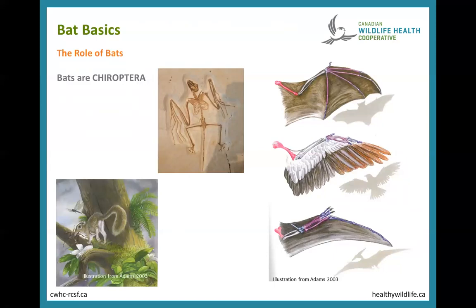Chiroptera is a Greek word that literally means 'hand wing.' If you look at a drawing of a bat's wing, you can see that like us it has five fingers — just very long and thin with a membrane in between — so it literally flies with its hands. Also illustrated are the wings of a bird and the extinct pterodactyl; the bone structure is very different. These groups are not related and evolved flight through convergent evolution — groups of unrelated animals that evolved the same mechanism because it was useful for their survival.